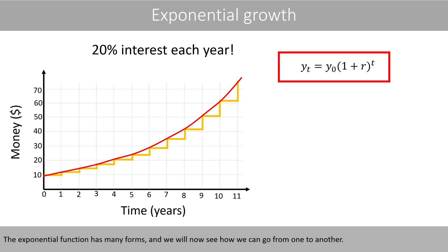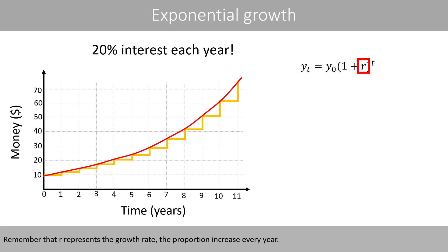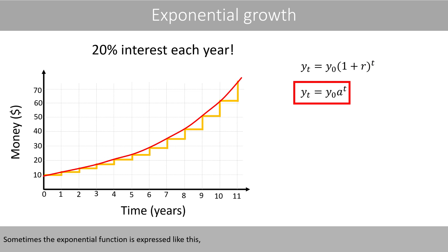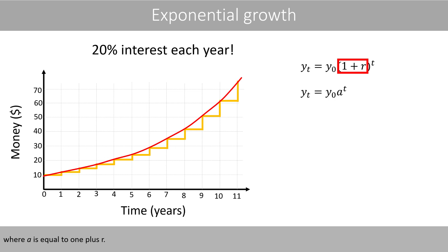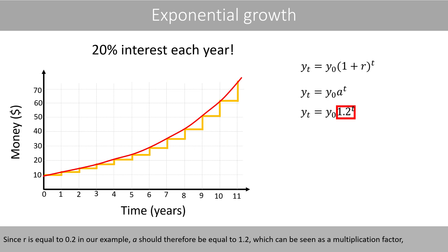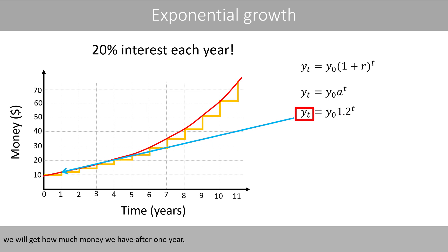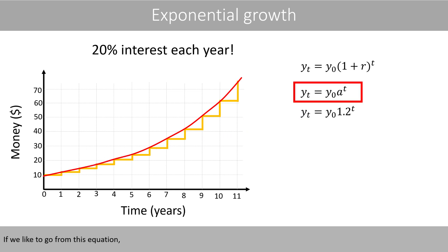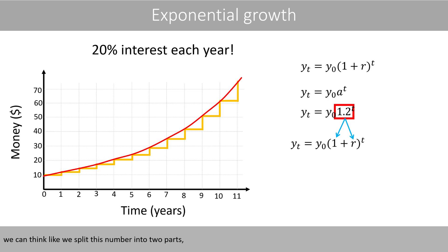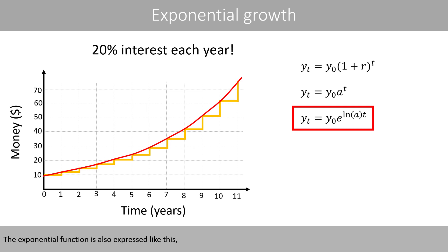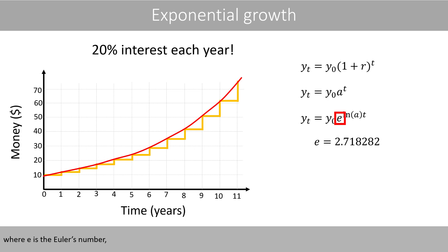The exponential function has many forms, and we will now see how we can go from one to another. Remember that R represents the growth rate — the proportion increase every year. Sometimes the exponential function is expressed with A, where A is equal to 1 plus R. Since R is equal to 0.2 in our example, A should therefore be equal to 1.2, which can be seen as a multiplication factor. The exponential function is also expressed using Euler's number E, where L and A is the natural log of A.